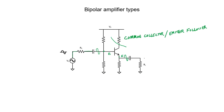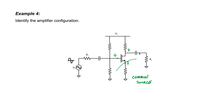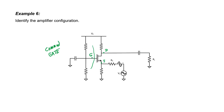For the common collector configuration, it's non-inverting — when the signal swings high, the output also swings high; when the signal's low, the output is low. The same is true for common base: when the signal moves up, the voltage at the load also moves up — they move up and down together. For common source, it's inverting. Common drain is non-inverting and common gate is also non-inverting.